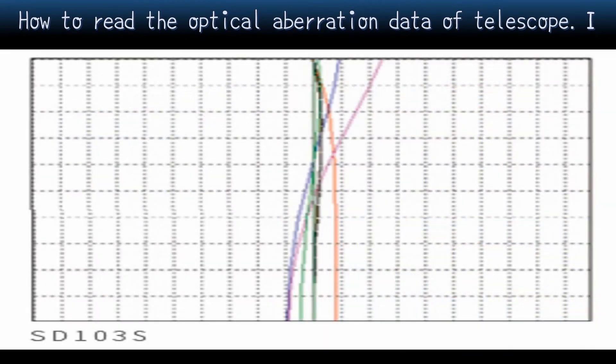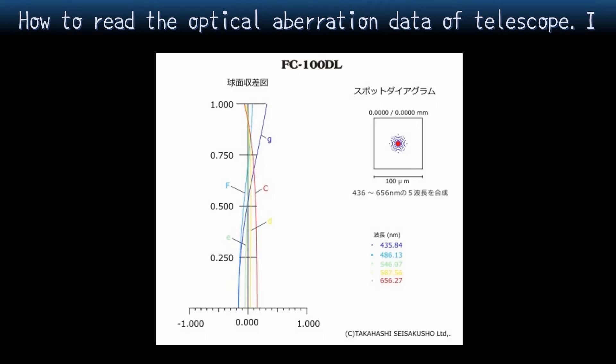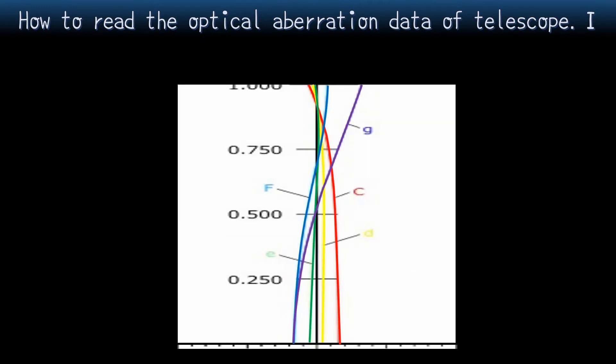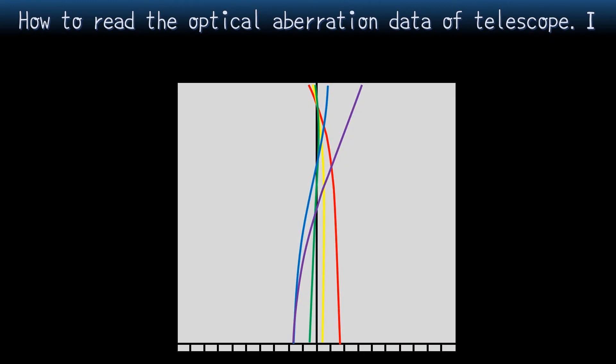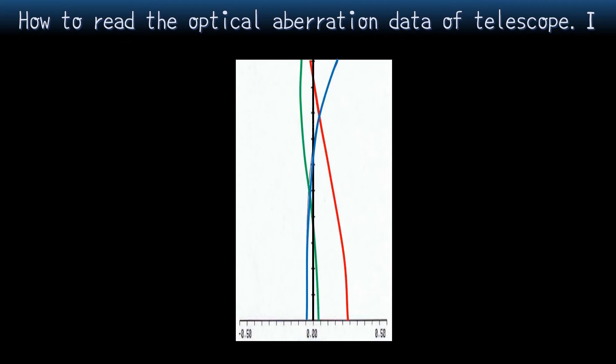First, I'll unify the format so that the graphs of these products can be easily compared. Of course, I'll show you the rewriting process so that there is no injustice. First, SD-103S. Second, FC-100D. Final, Capri-102ED.